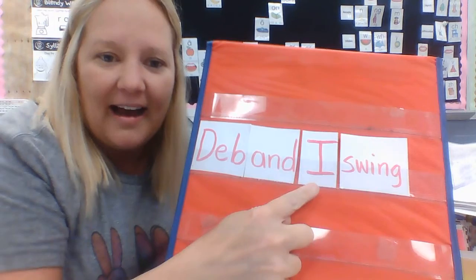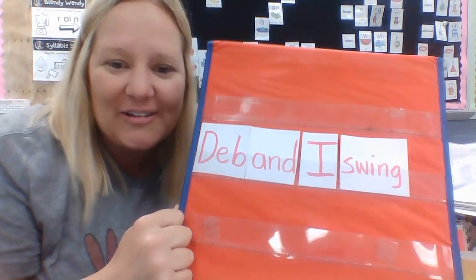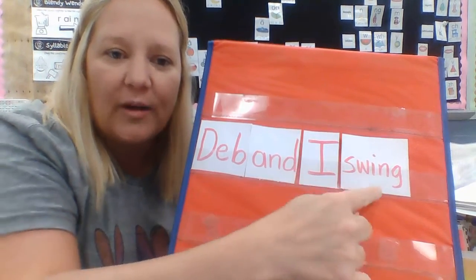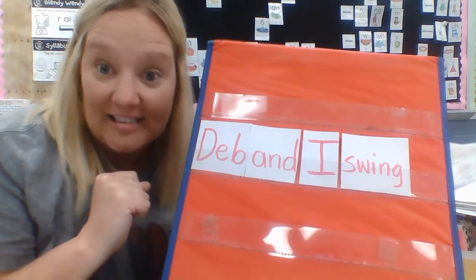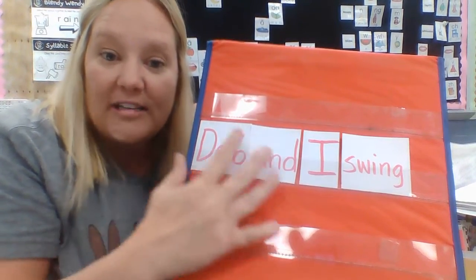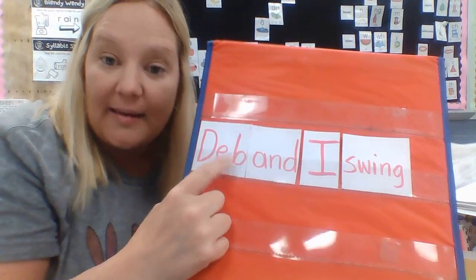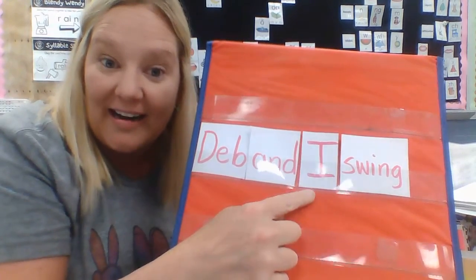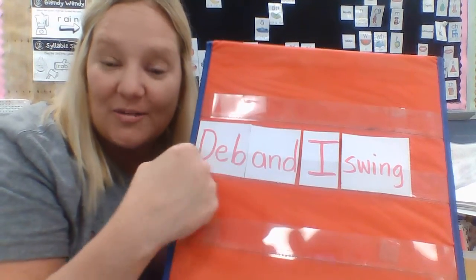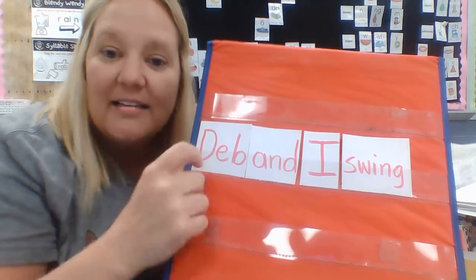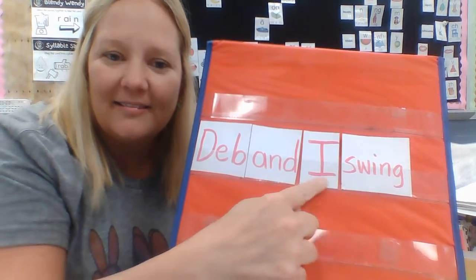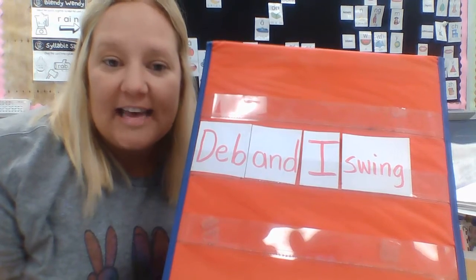Here we go — let's try it: Deb and I swing. Copy me, boys and girls: Deb and I swing. Does it sound right? It does. Does it make sense? Yes, it makes sense because I can understand what it means. It means that a girl or a woman named Deb swung on a swing with somebody — Deb and I swing. If you're the one reading or saying the sentence to somebody, then it's you that went on the swing with Deb. Deb and I swing. That makes sense and it sounds right.